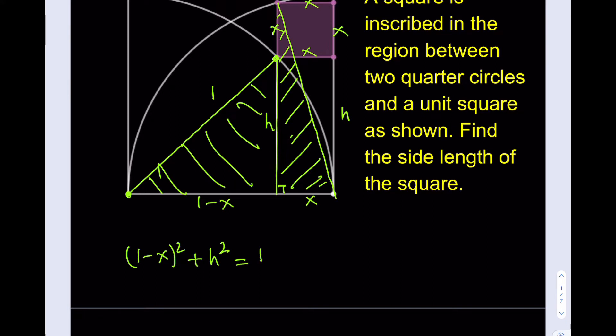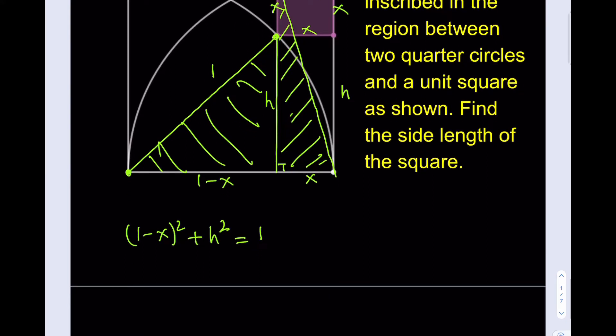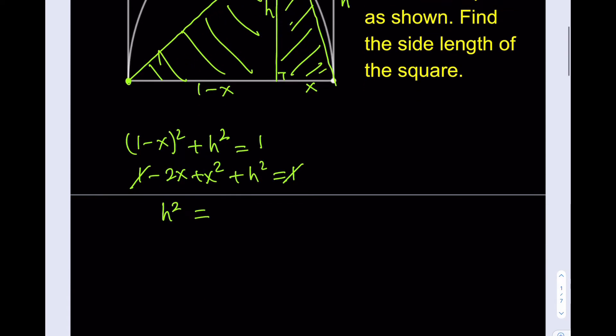What I'm going to do for this one is simplify this. It's going to be one minus 2x plus x squared plus h squared equals one. One cancels out, and then we can isolate h squared here. It's going to look like 2x minus x squared. And if I square both sides, I'm going to be getting this one.